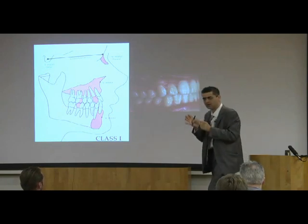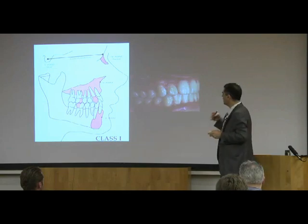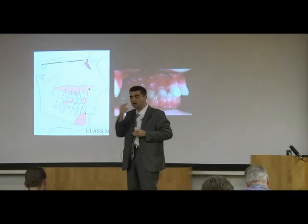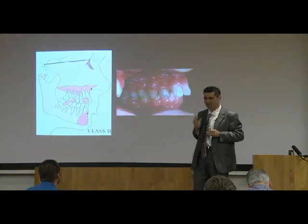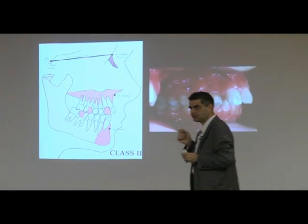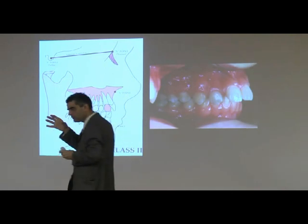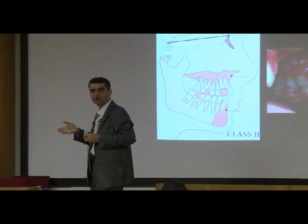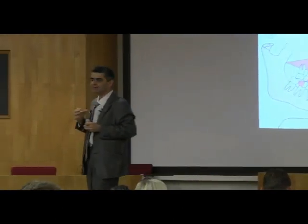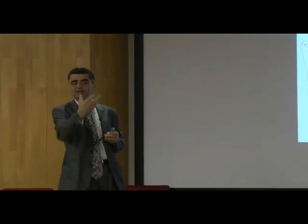That brings us to Skeletal Class 2. In Class 2 there are three types — so we're already moving away from Angle's classification. You can have a Class 2 jaw where the maxilla is normal but the mandible is retrognathic; that's the more common presentation. Or you can have a Class 2 where the mandible is in the right position but the maxilla is protrusive — that's more uncommon.